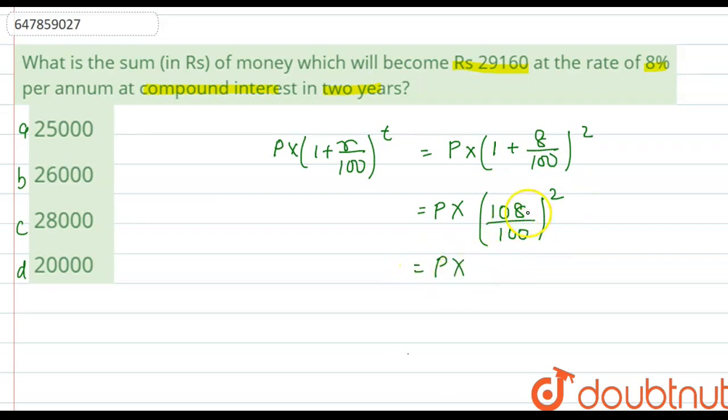When we solve it, 108 square is 11,664, and since we have 2 digits and then 2 digits, then we will put the decimal here. So this will be P, or this will be the amount, because you know that the amount is given, so you will put the amount here. So P equals 29,160.